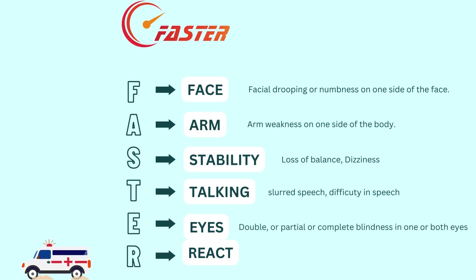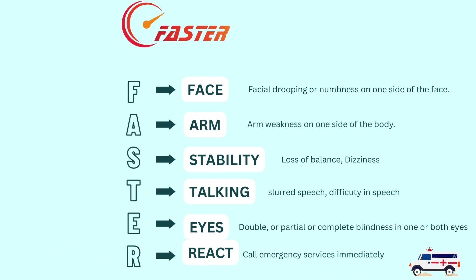E is for eyes: changes in vision, including seeing double or partial or complete blindness in one or both eyes. And lastly, R is to react — call emergency services immediately if you see any of these symptoms, even if symptoms go away. It's important to follow this FASTER approach to get better treatment for the patient.